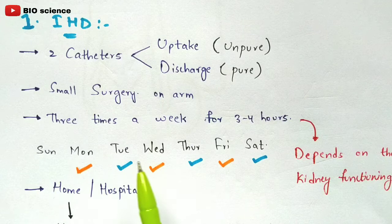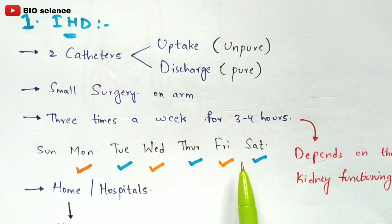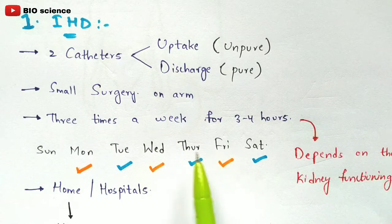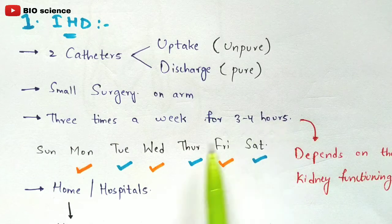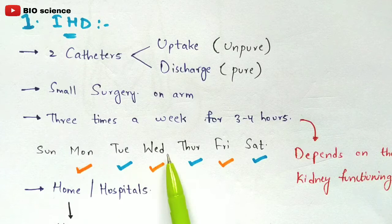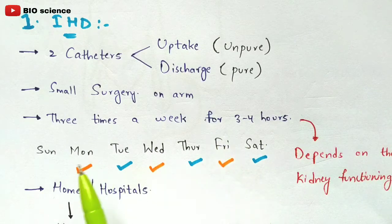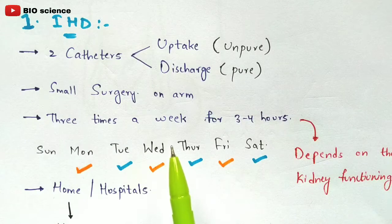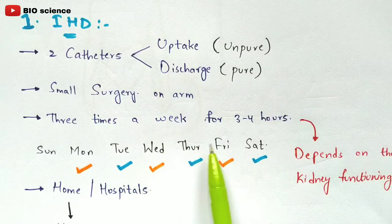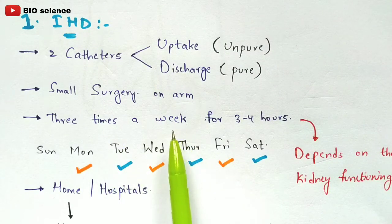IHD is performed three times a week for three to four hours each session. For example, sessions can be on Monday, Wednesday, and Friday — alternate days. Another option is Tuesday, Thursday, and Saturday. The schedule depends on your preference, but three sessions per week is the standard.